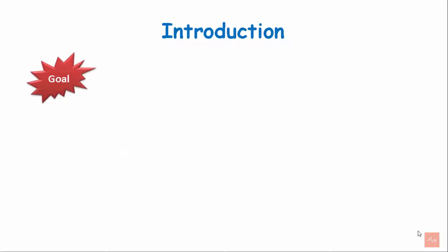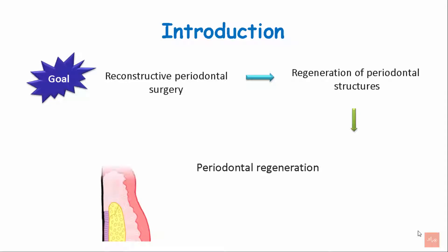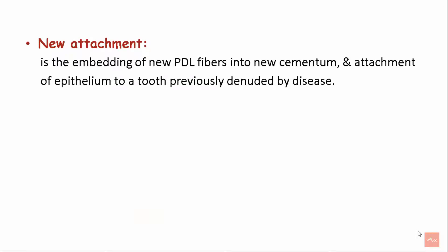The ultimate goal of reconstructive periodontal surgery is to achieve regeneration of periodontal structure. Periodontal regeneration involves the formation of new cementum, formation of new alveolar bone, and functionally aligned periodontal ligament. New attachment is another healing outcome of reconstructive periodontal surgeries. It is the embedding of new periodontal ligament fibers into new cementum and attachment of epithelium to a tooth previously denuded by disease.